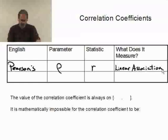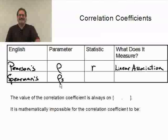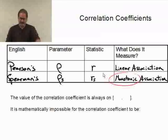Now, the other type of correlation that we will talk about is called Spearman's. And the parameter is also rho, but what we do is we subscript it with an S. So now we know we're talking specifically about Spearman's. And the statistic is, once again, r, and again we will subscript that with an S. So we know we're talking specifically about Spearman's. And this is a measurement of monotonic association. And like I said earlier, we will discuss the idea of monotonicity a little bit later.